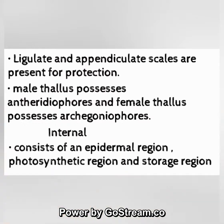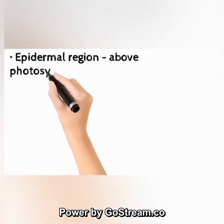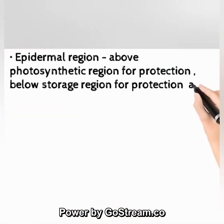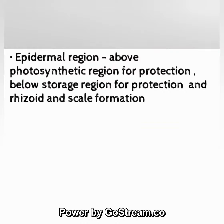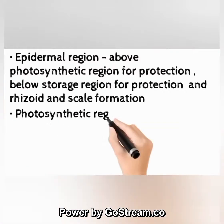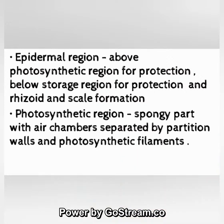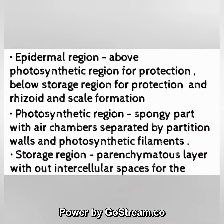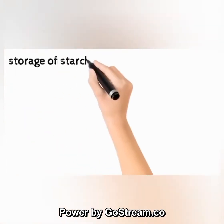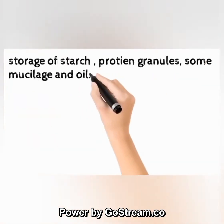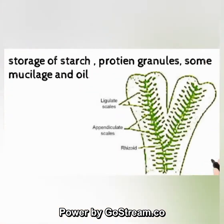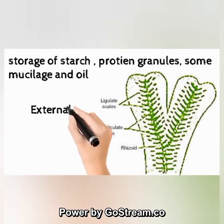Internal structure consists of an epidermal region, photosynthetic region, and storage region. The epidermal region is above the photosynthetic region (for protection) and below the storage region (for protection and rhizoid and scale formation). The photosynthetic region is a spongy part with air chambers separated by partition walls and photosynthetic filaments. The storage region is a parenchymatous layer without intercellular spaces, storing starch, protein granules, mucilage, and oil.